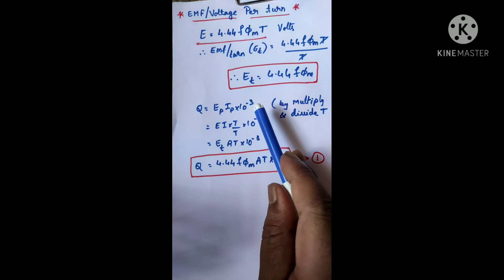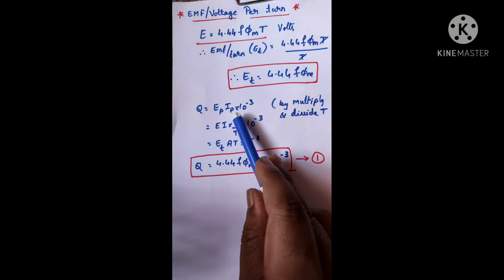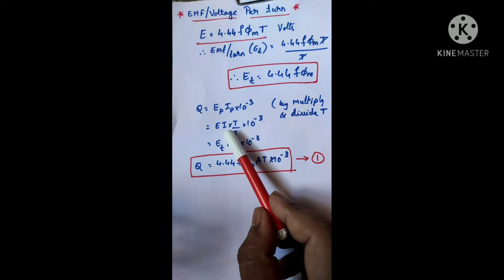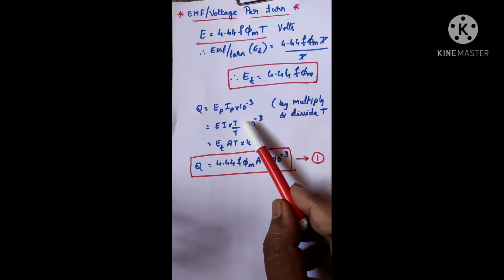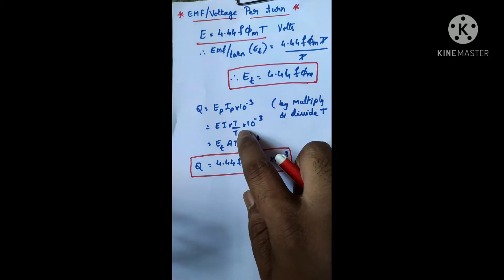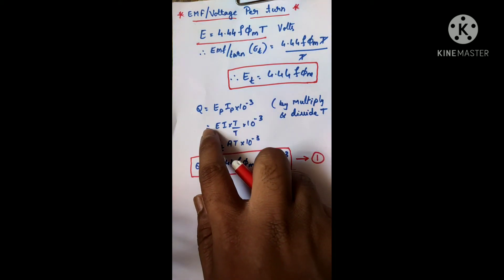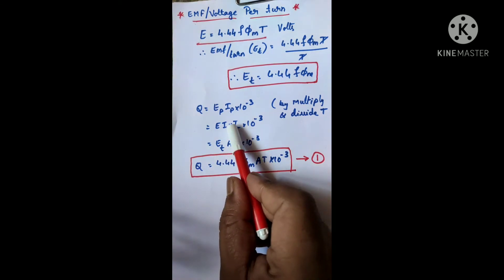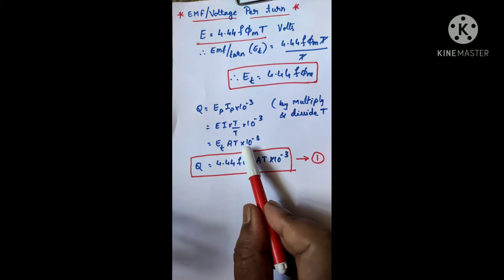The output equation is Q = EP × IP × 10⁻³, where P stands for the phase value. So E × I × 10⁻³ is the single-phase output power. Now I will multiply and divide the expression by the number of turns T. By doing this I can rewrite E/T as ET (EMF per turn), and I × T becomes ampere-turns, so the expression becomes ET × (ampere-turns) × 10⁻³.